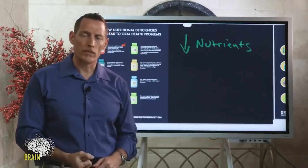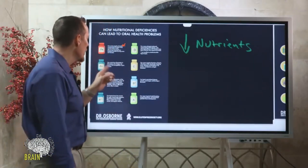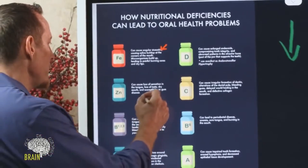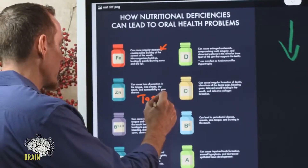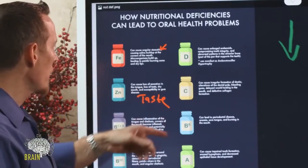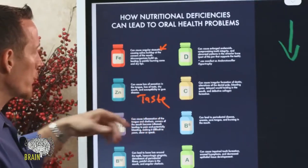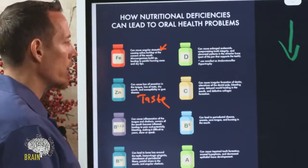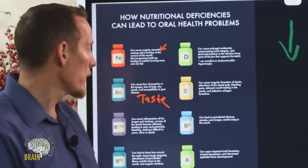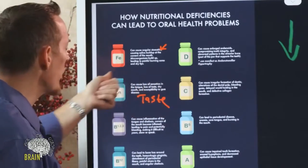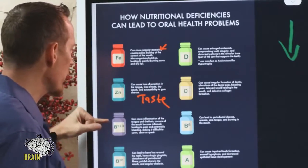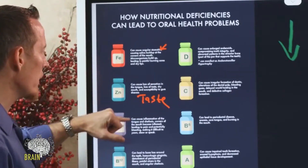Zinc plays a role in the production of proteins important for collagen formation. When zinc is low, it starts to affect taste and smell. When taste and smell change, we generally tend to gravitate toward foods higher in salt or sugar to get flavor. This can compound and lead to poor dietary choices as a result of seeking out flavor.